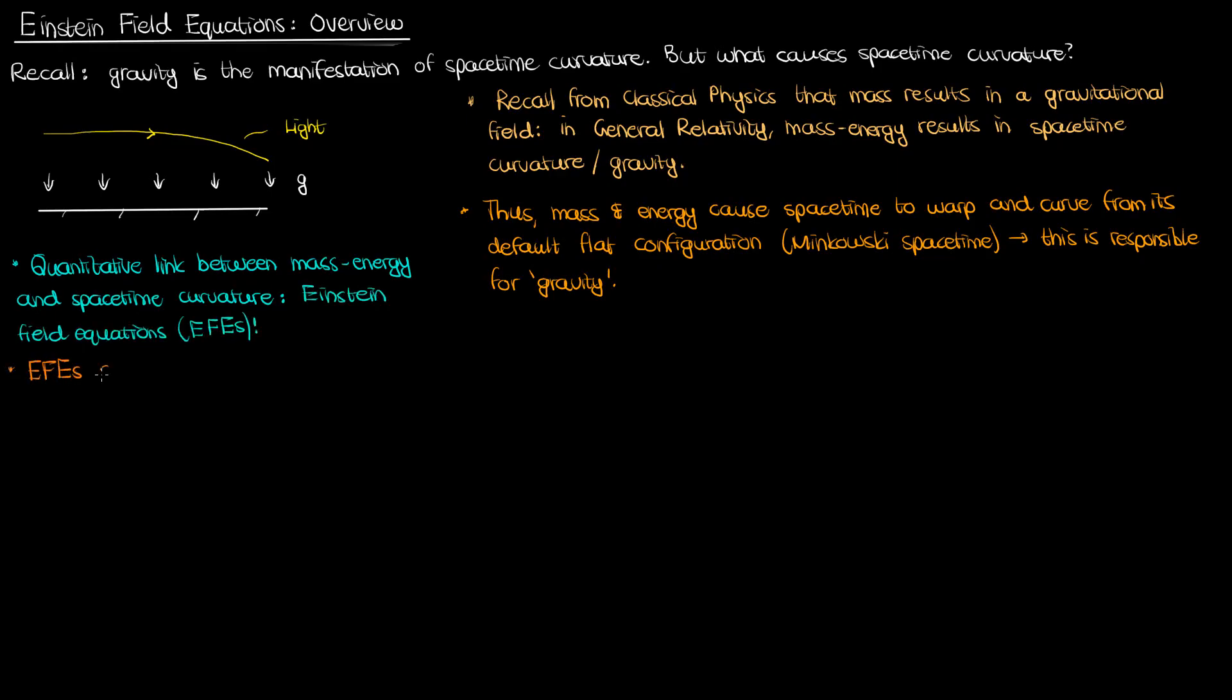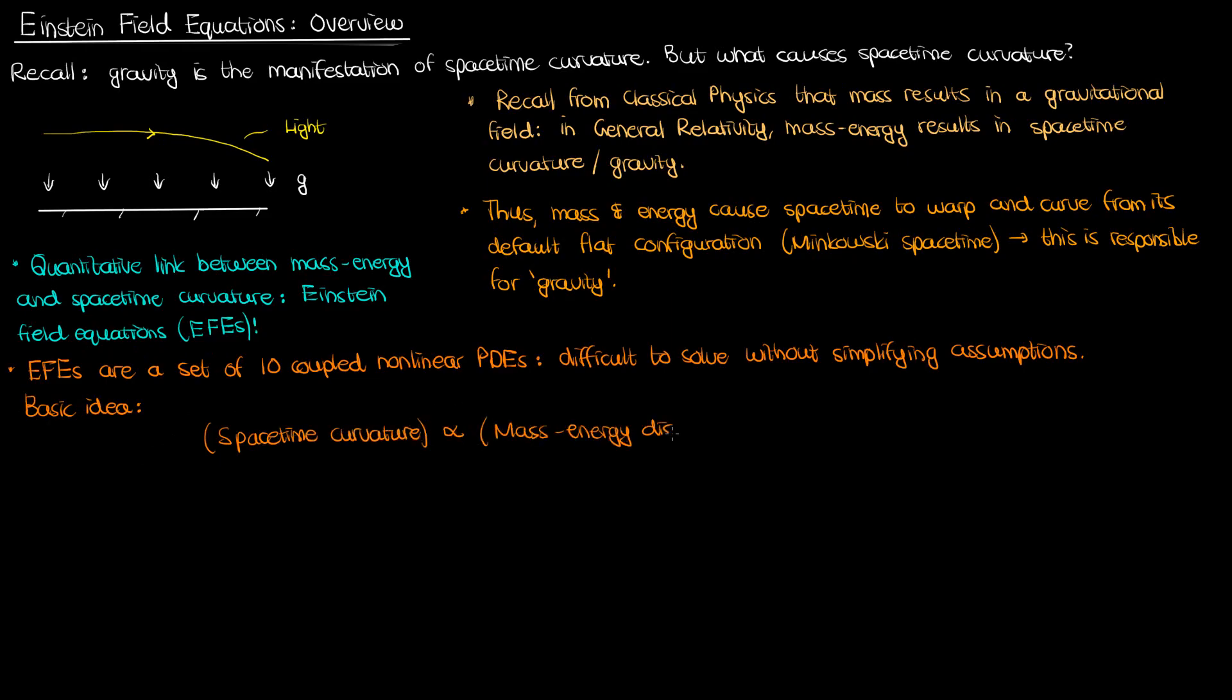The Einstein field equations are a set of 10 coupled non-linear partial differential equations, which are nearly impossible to solve unless you make simplifying assumptions. In the most basic sense, the Einstein field equations describe the relationship between spacetime curvature on one side and the amount of mass-energy distributed in spacetime on the other side. The more mass-energy you have, the more your spacetime hypersurface will be curved or warped, so we can say that spacetime curvature directly increases with the mass-energy distribution.